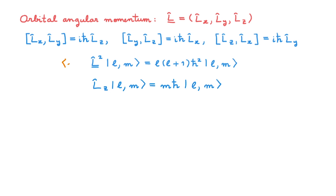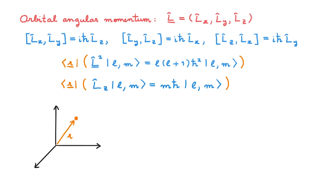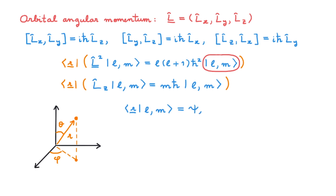This amounts to projecting the two sides of these two equations onto the basis states. On top of that, it is usually more convenient to work in terms of spherical coordinates, where positions are described by a distance r from the origin, by a polar angle theta, and by an azimuthal angle phi that first requires projecting onto the horizontal plane and then measuring the angle from this axis. So let's start with the eigenstates lm.